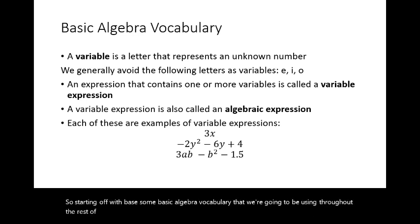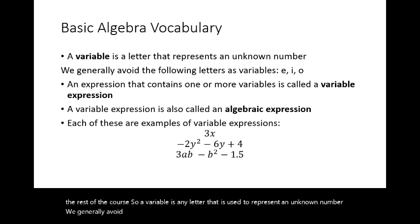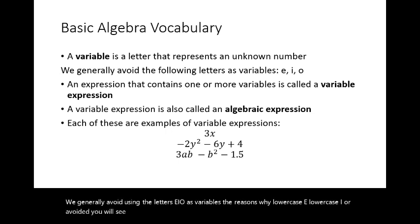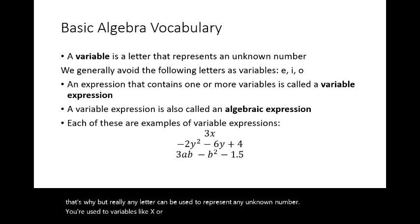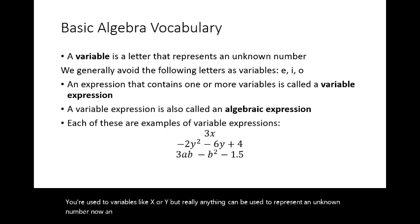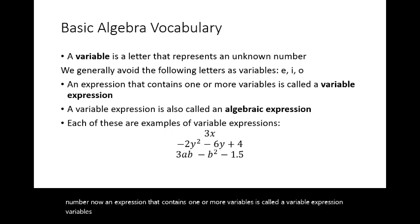A variable is any letter that is used to represent an unknown number. We generally avoid using the letters e, i, and o as variables. The reasons why lowercase e and lowercase i are avoided you will see in future courses. The letter o is avoided because it looks like a zero. But really any letter can be used to represent any unknown number. An expression that contains one or more variables is called a variable expression, also known as an algebraic expression.